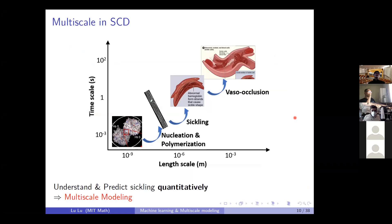Sickle cell disease is really a multiscale disease. At the nanoscale, we have hemoglobin and the interactions between hemoglobin molecules. Then the hemoglobin polymerizes into fibers at another scale. At the RBC scale — roughly 8 microns — we have many fibers interacting with each other and pushing the membrane into the sickle shape. And we can go further to the blood flow scale, where we have thousands of RBCs in a small local region. I aim to understand and predict the sickling of RBCs quantitatively using multiscale modeling.